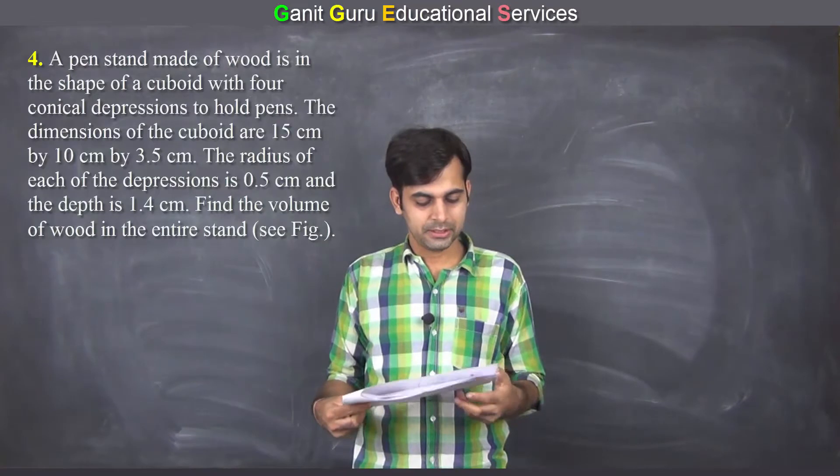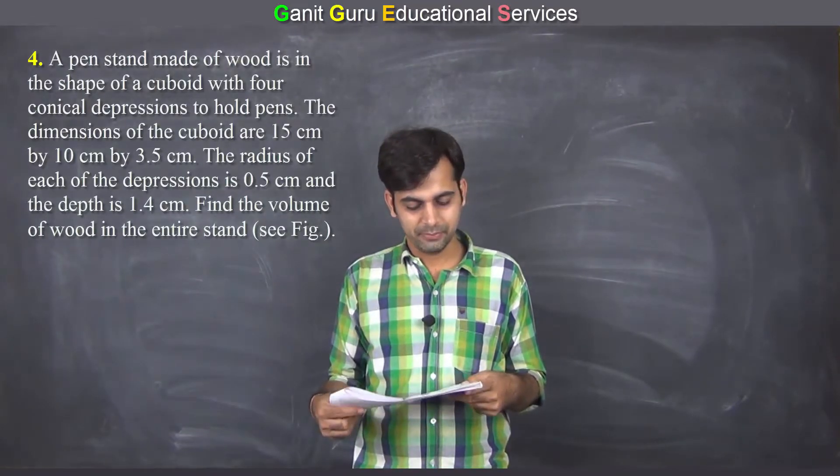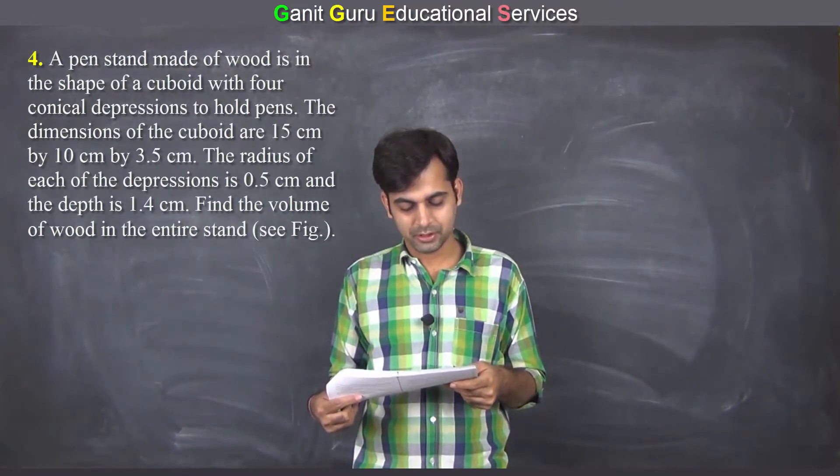Question number 4. A pen stand made of wood is in the shape of a cuboid with 4 conical depressions to hold pens.